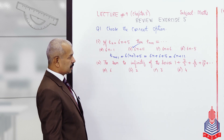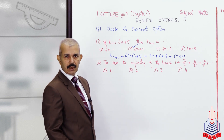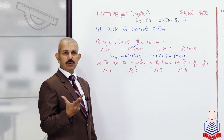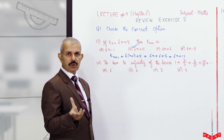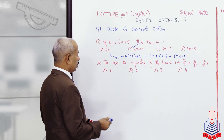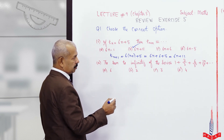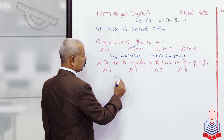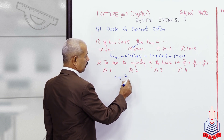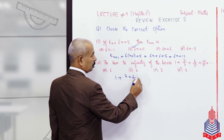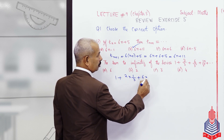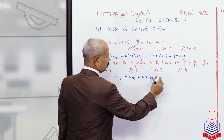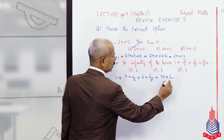The series is: 1 plus 2/3 plus 6/3² plus 10/3³. This whole expression is an MCQ question. You can rewrite it as 2 into (1/3) plus 6 into (1/3)² plus 10 into (1/3)³.